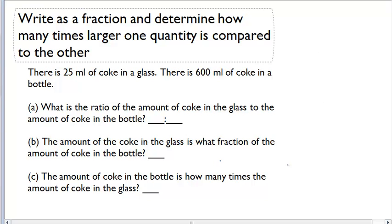Write as a fraction and determine how many times larger one quantity is compared to the other. There's 25 milliliters of coke in a glass, and there's 600 milliliters of coke in a bottle.